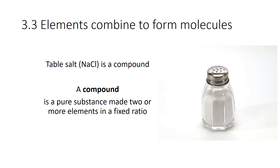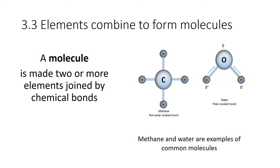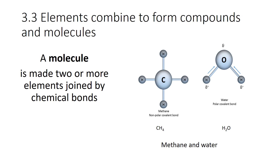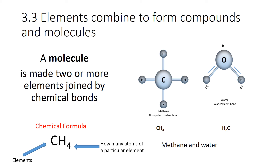A compound is like a molecule in many ways. Sodium chloride is a pure substance made of two or more elements in a fixed ratio — sodium chloride is an example of a compound, it's table salt. No matter how much table salt you have, 50% of it will be sodium and 50% of it will be chlorine. A molecule is made of two or more elements joined by chemical bonds. Two simple examples are methane and water. Methane is CH4 and water is H2O. The chemical formula tells you how many elements and the ratio — one carbon and four hydrogens in methane, two hydrogens and one oxygen in water.